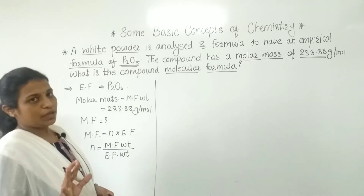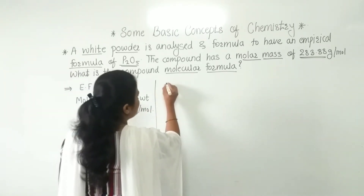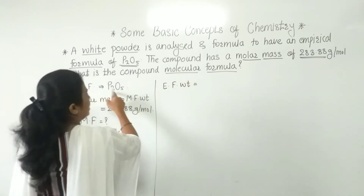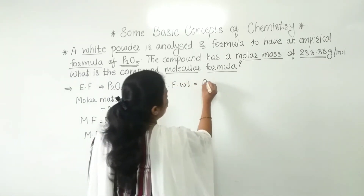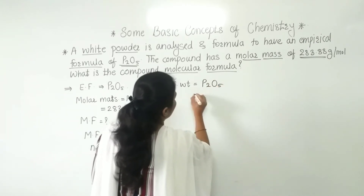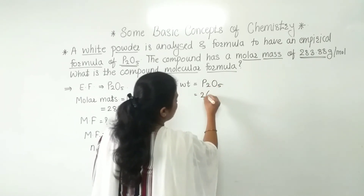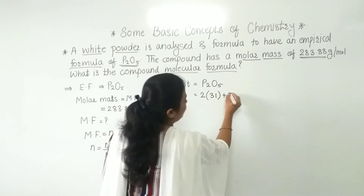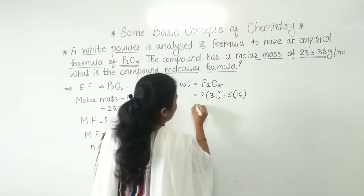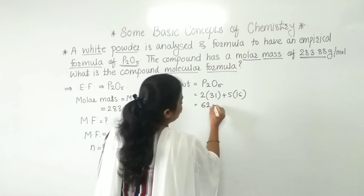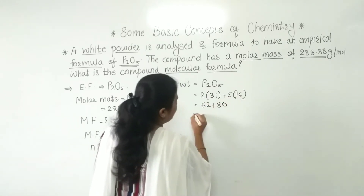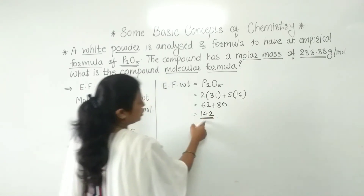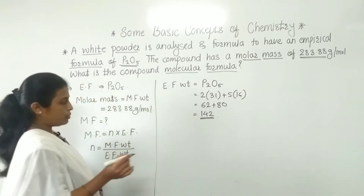The empirical formula is P2O5. There are two phosphorus atoms — phosphorus has a mass of 31 — so 2 × 31 = 62, plus 5 × 16 = 80. So the empirical formula weight is 62 + 80 = 142.